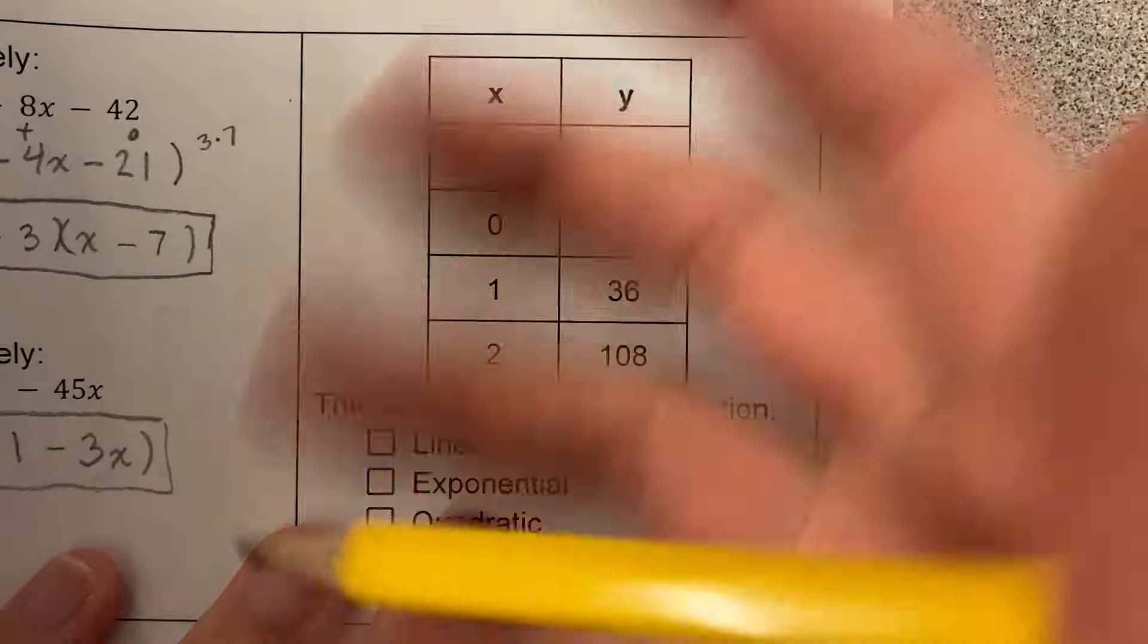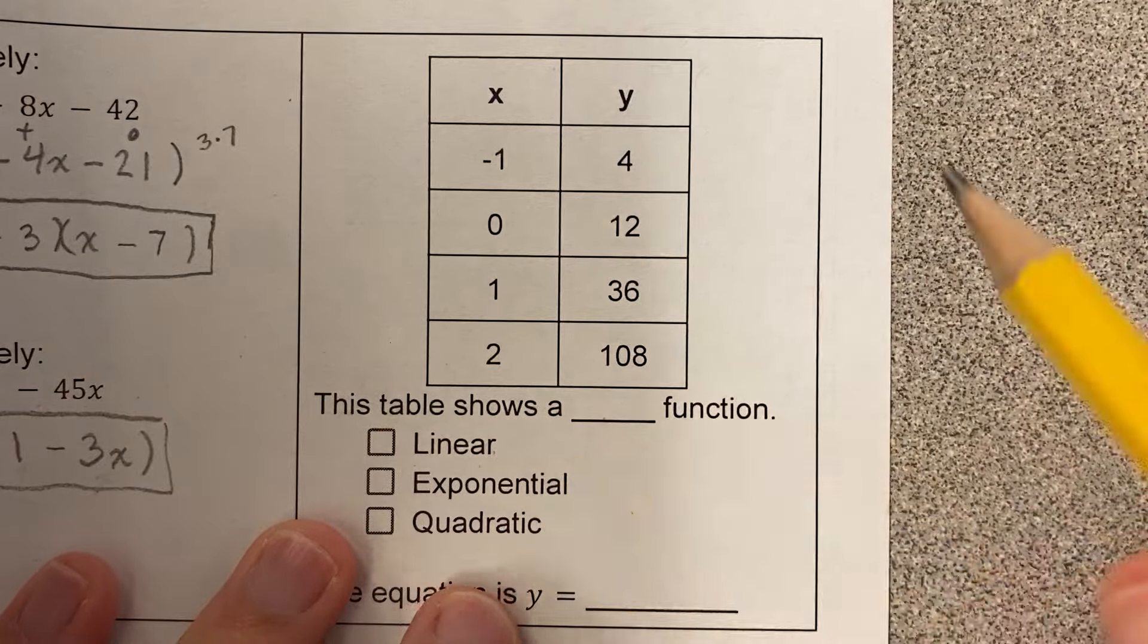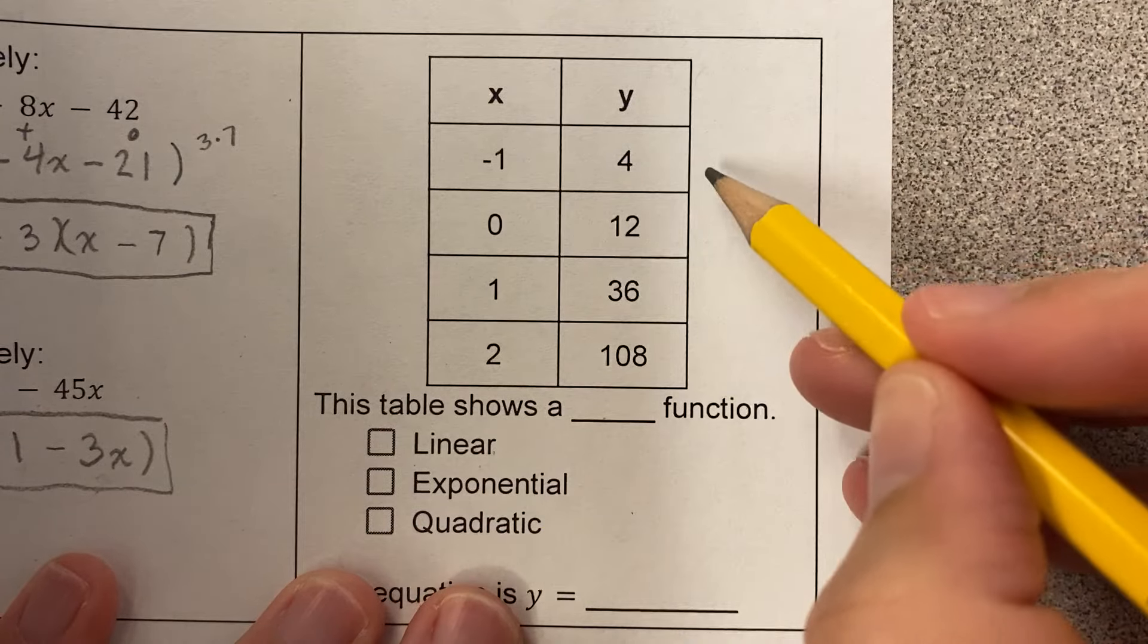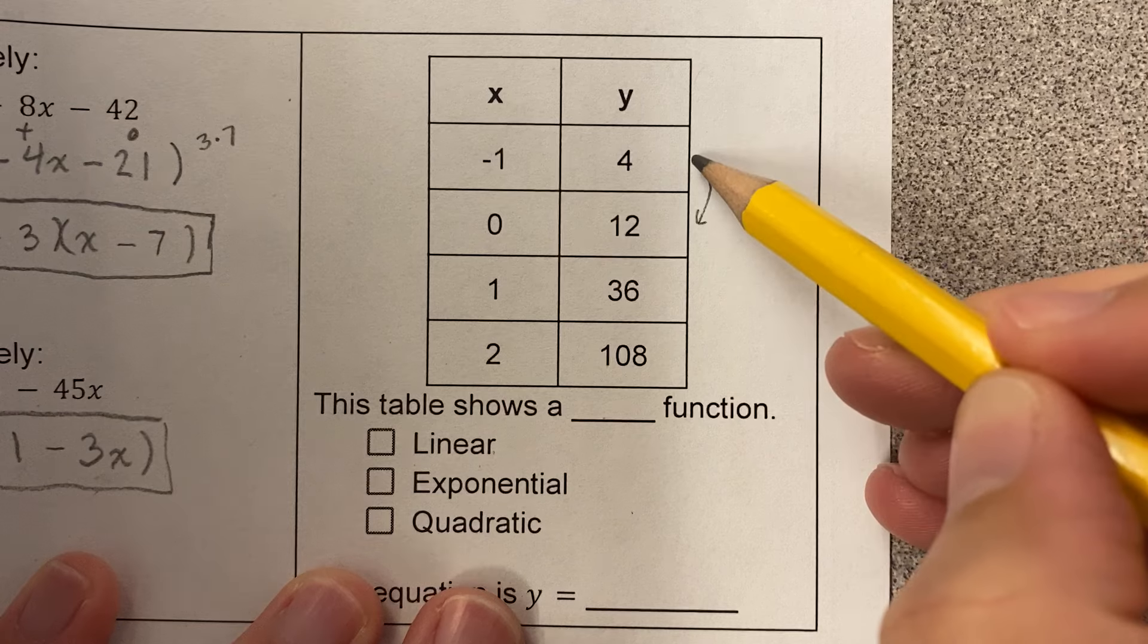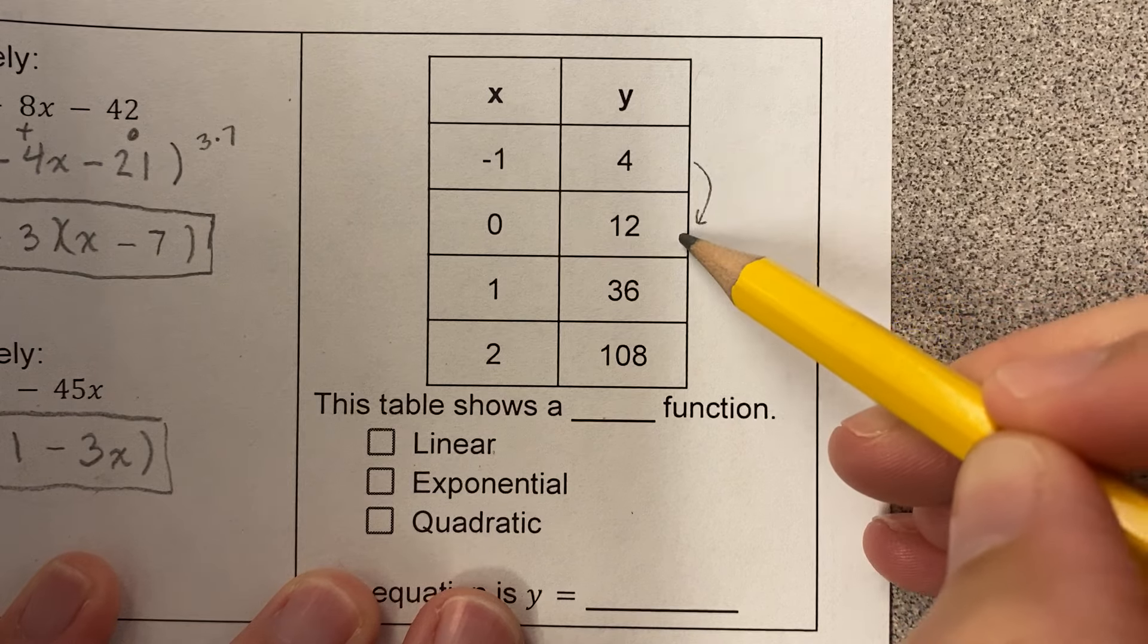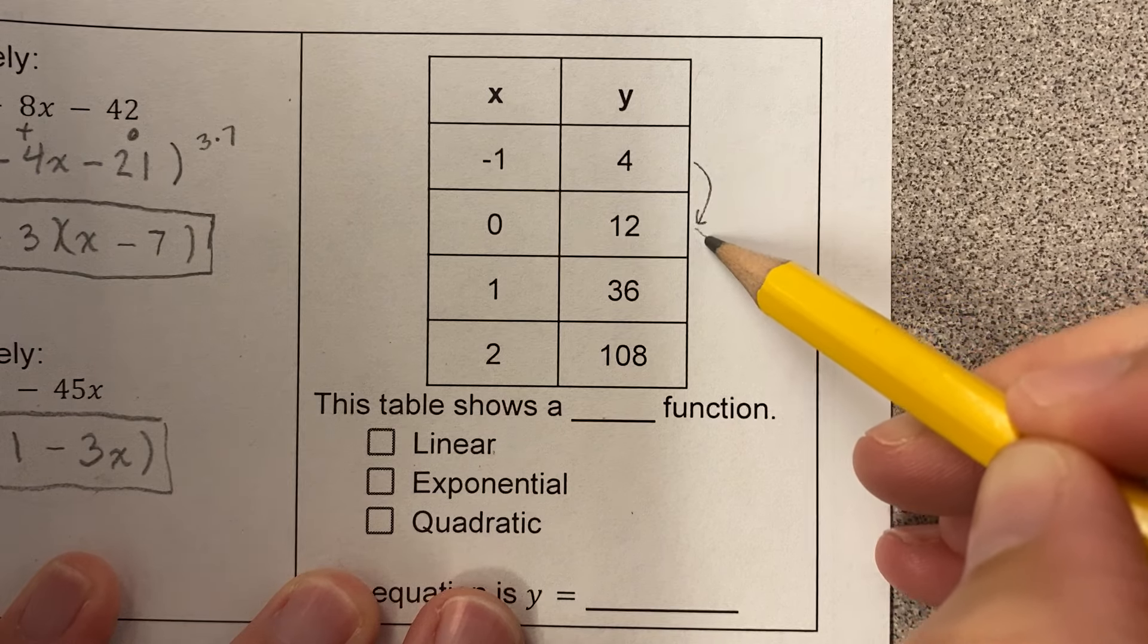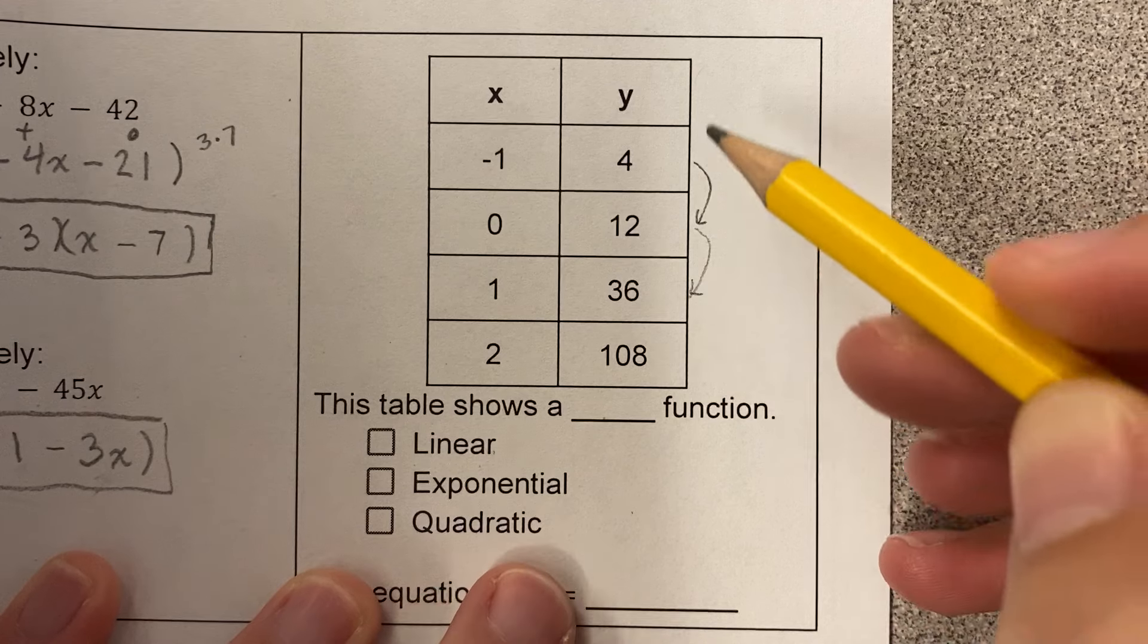This table shows a blank function. Linear exponential quadratic. So what I'm looking for is what's the pattern? And I might think the number is getting bigger. So it's either adding or multiplying. So let's see. 4 plus 8 is 12. If I add 8 again, do I get 36? Oh no. Must be multiplying.